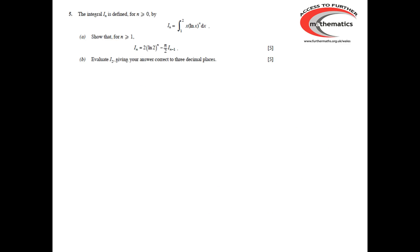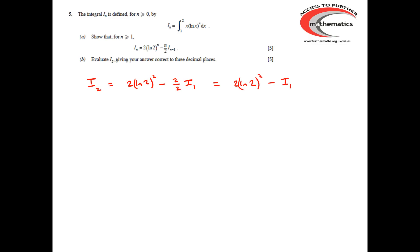The second part of the question asks us to evaluate I_2. Using the recurrence relationship with n equals 2, we obtain I_2 is 2 ln(2) squared, take away 2 over 2 lots of I_1 — which, of course, is just 2 ln(2) squared, take away I_1.